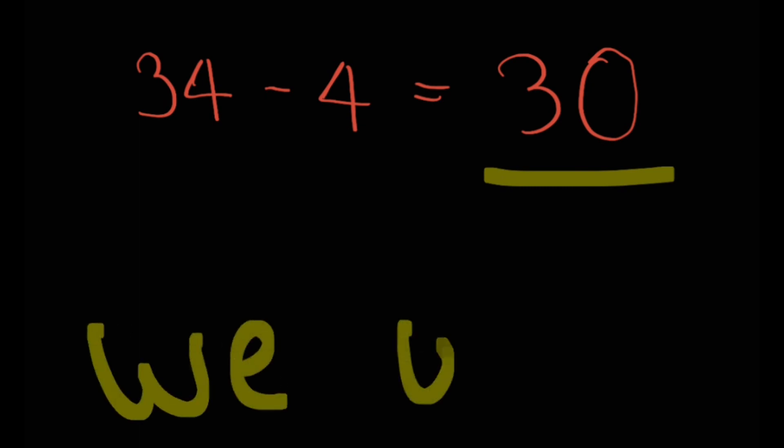Then, we take our 34, subtract 4 from it, and we get 30. Do we divide it? Do we add something to it? Do we subtract something to it? Do we multiply it with anything? No. We simply leave it as is.